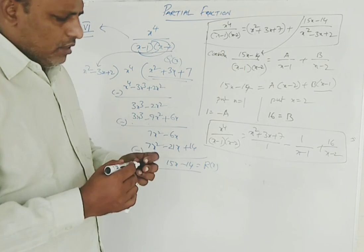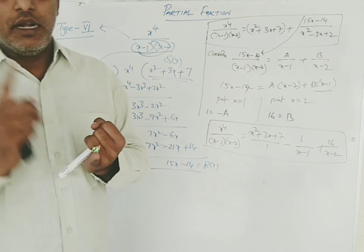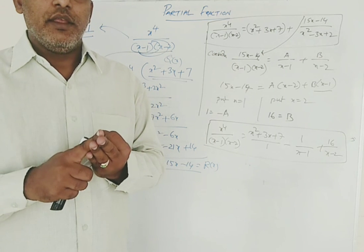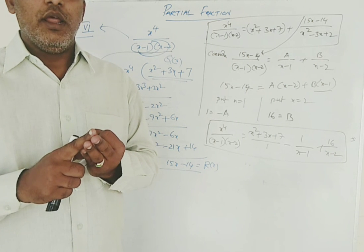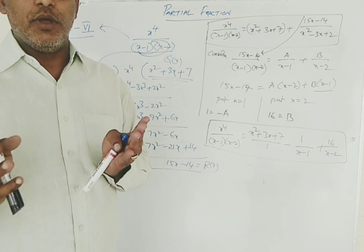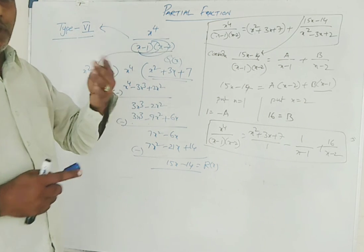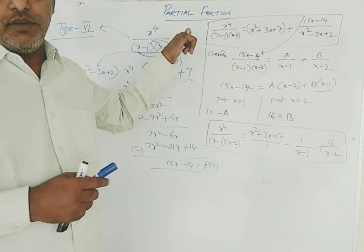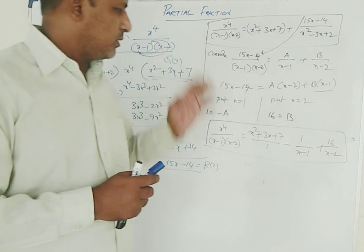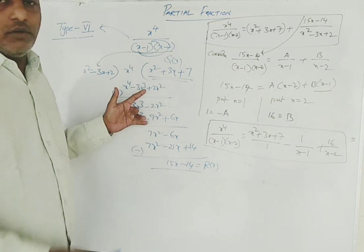These are all the types in partial fractions. Type 1: irreducible non-repeated linear factors. Type 2: irreducible repeated linear factors. Type 3: irreducible non-repeated quadratic expressions. Type 4: irreducible repeated quadratic expressions. Types 1 through 4 come under proper fractions. Type 5 is an improper fraction where degree of f of x equals degree of g of x. Type 6 is an improper fraction where degree of f of x is greater than degree of g of x. These are all the types in partial fractions. Thank you.